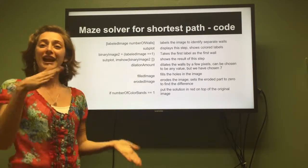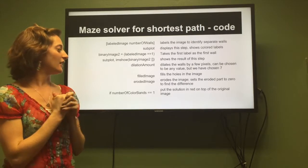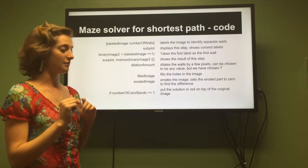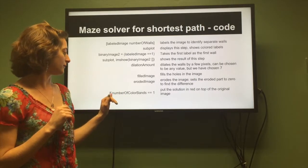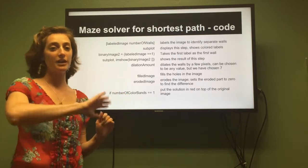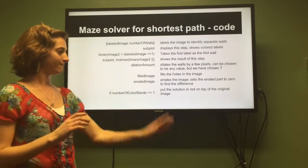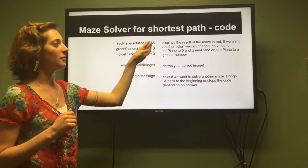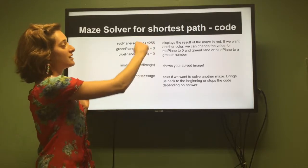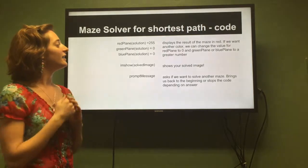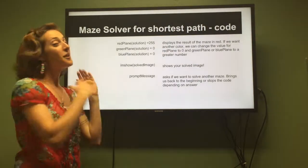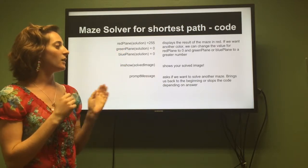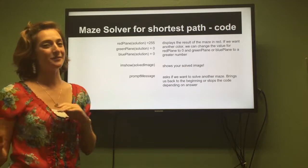After the dilation — which can also be changed if you want — the image is filled. After that it's eroded and the eroded part is set to zero to find the difference in between. If the number of bands equals one, it puts the red solution on top of the original image. If you want it in different colors like green or blue, you can change it depending on the number you put there — to change to green, you just make the relevant value zero. Afterwards it shows your main image with the red outline and asks if you want to do another maze to solve.